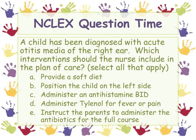Let's go ahead and do an NCLEX question. A child has been diagnosed with acute otitis media of the right ear. Which interventions should the nurse include in the plan of care? The right answers are A, D, and E. A is a soft diet — when you're chewing something crunchy it's loud and popping in your ear, and their ears already hurt. D is Tylenol for fever or pain. E is the full course of antibiotics.